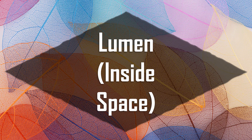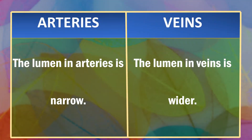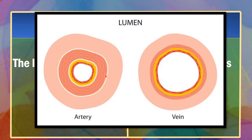Now, let's differentiate between these two blood vessels on the basis of their lumen, or inside space. A lumen is the inside space of a tubular structure — in this case, the blood vessels. The lumen in arteries is narrow while the lumen in veins is wider. Arteries have smaller lumina than veins, a characteristic that helps maintain the pressure of blood moving through the system.